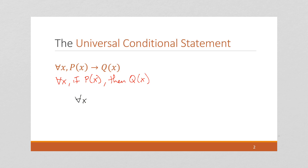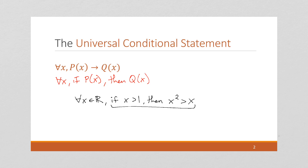A common example: for all x in the real numbers, if x is greater than 1, then x squared is greater than x. In algebra, you might learn something like this rule, and usually the domain is implied rather than explicitly written out. But it's usually there — if we're stating a mathematical rule, it usually applies to certain types of values.